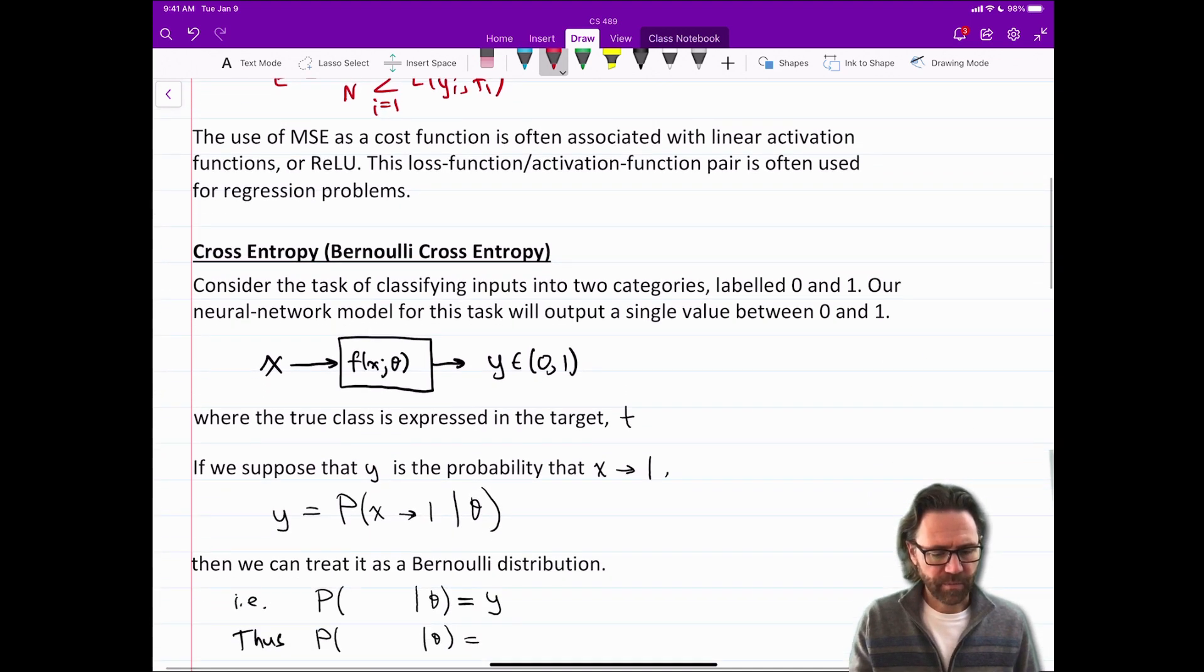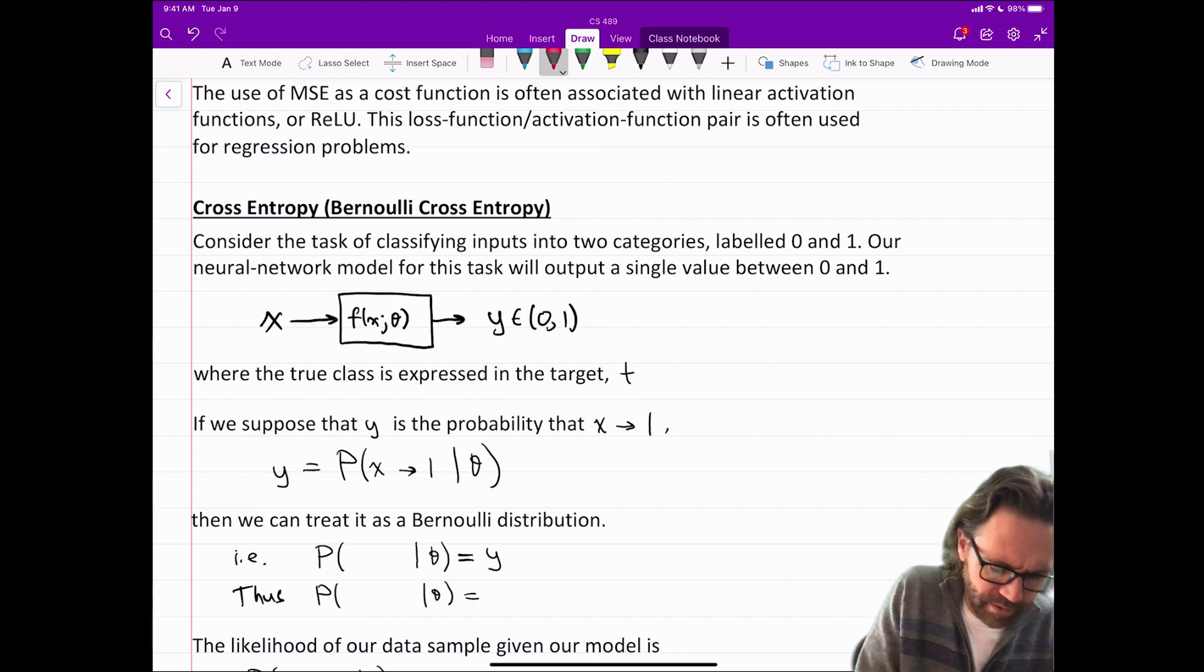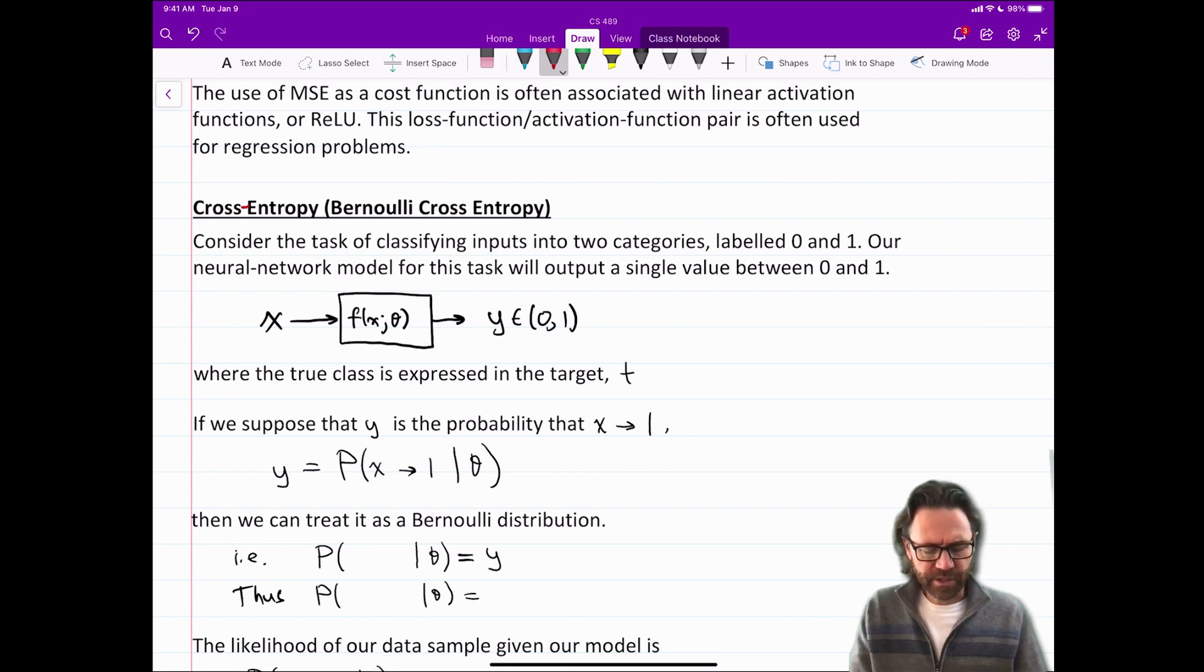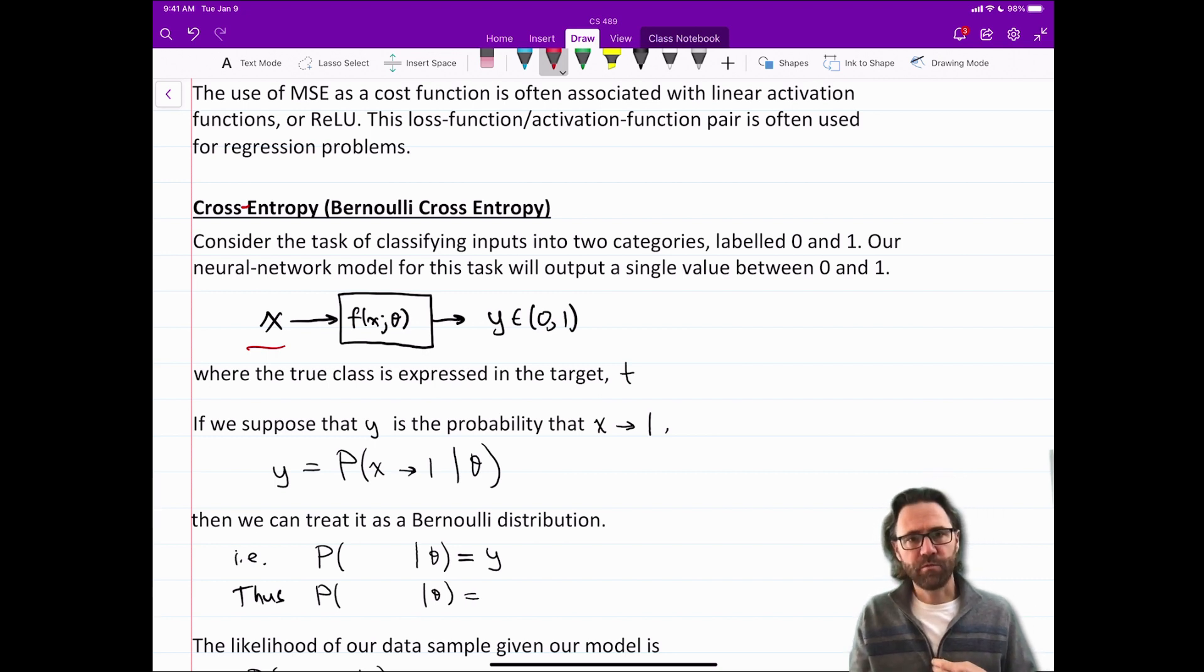Second cost function I'd like to talk about is cross entropy or also called Bernoulli cross entropy. So consider the task of classifying inputs into two categories labeled zero and one. Our neural network model for this task will output a single value between zero and one. So X is input and then we have our neural network do its thing and it outputs a y in the open interval zero to one or it could be closed interval zero to one. The true class of the target is either zero or a one.